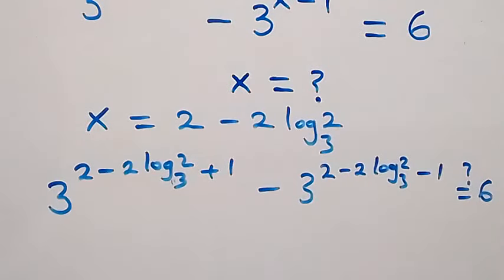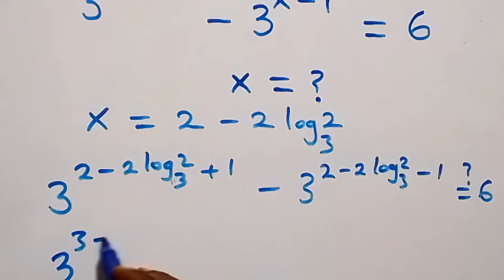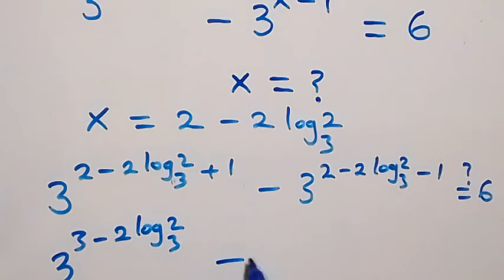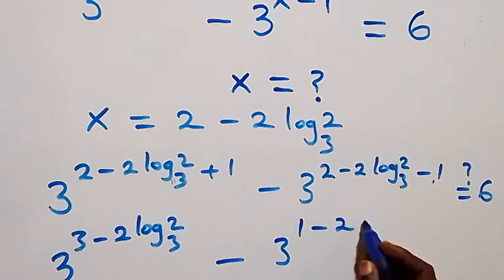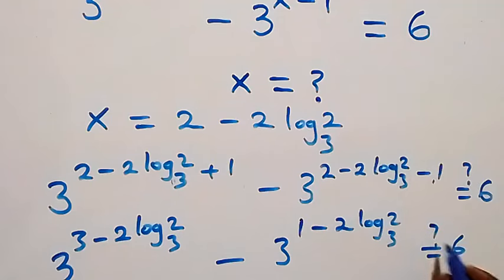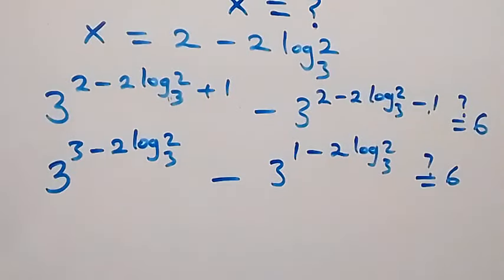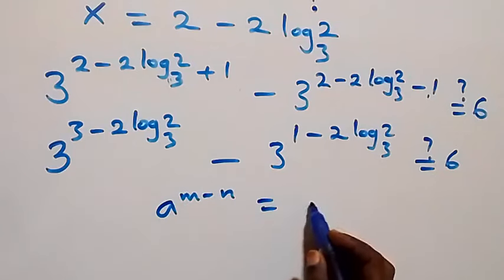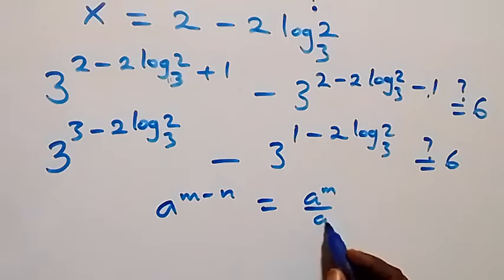When we simplify, 2 plus 1 is 3, so we can write 3 raised to power (3 minus 2 log 2 base 3) is equal to 6 on this side. Applying the law of indices — a raised to power (n minus m) equals a raised to power n over a raised to power m — we get 3 raised to power 3, over 3 raised to power (2 log 2 to base 3).